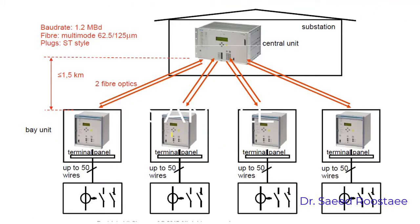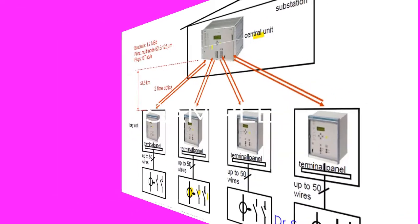Bay units collect information like current and switch position from each bay, and then send the information to the central unit where the busbar differential protection function is located.